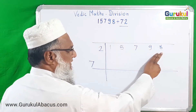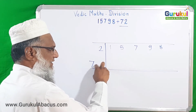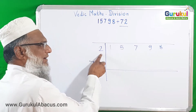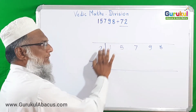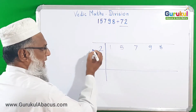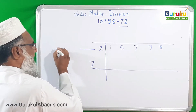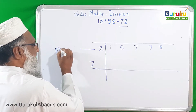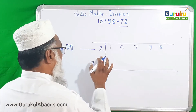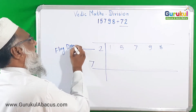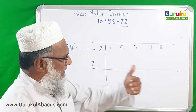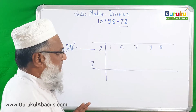Here, the reason we write the divisor digits separately is that we are not dividing the given number by 72 directly — we are dividing only by 7. We keep the digit 2 separately from 72. This unit-place digit is called the flag digit. Sometimes it can be a 2-digit or 3-digit flag number, but for our current understanding we call it the flag digit.